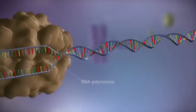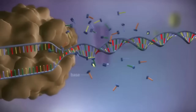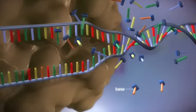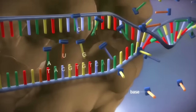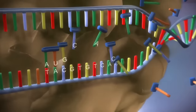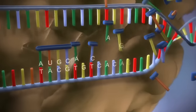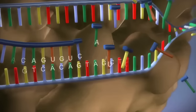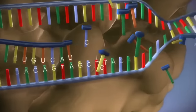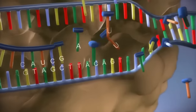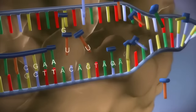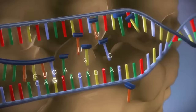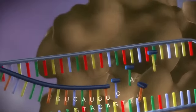RNA polymerase moves along the DNA, making a strand of messenger RNA out of free bases in the nucleus. The DNA code determines the order in which the free bases are added to the messenger RNA. This process is called transcription.